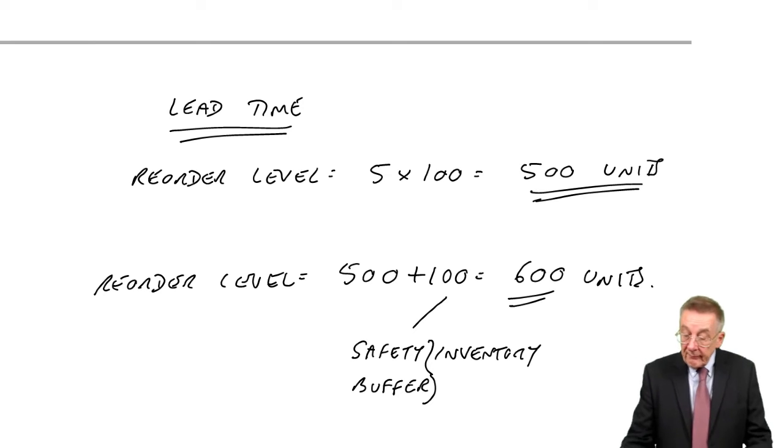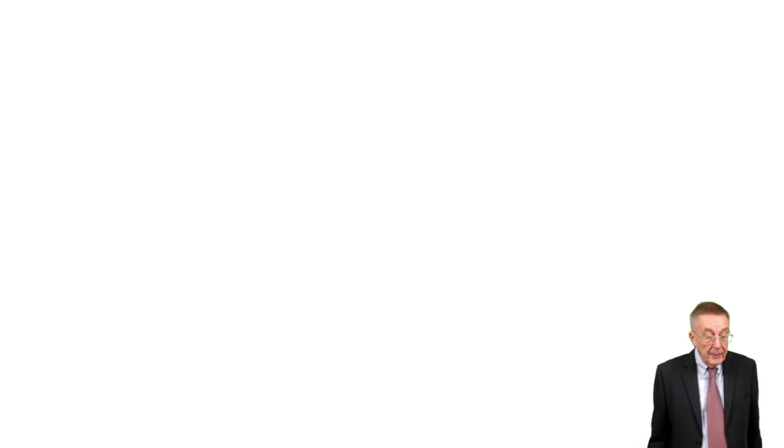Example seven, a bit of a variation here. Demand from customers is uncertain and is between 70 and 120 units a week. So instead of just talking about an average here, it's anything between 70 and 120 units a week. The lead time is uncertain and that's between three or four weeks. And it says, what would the reorder level have to be if we are never to run out of inventory?